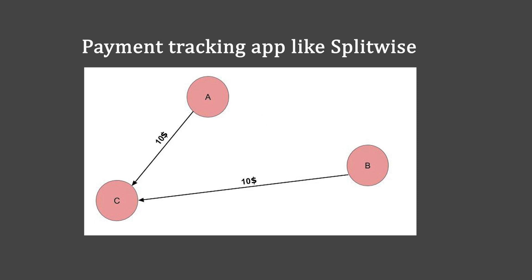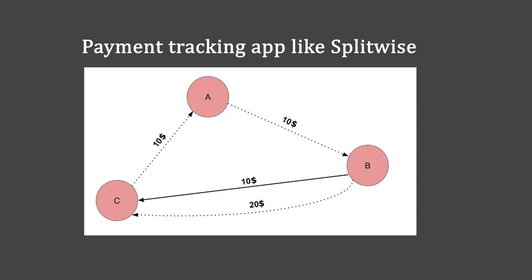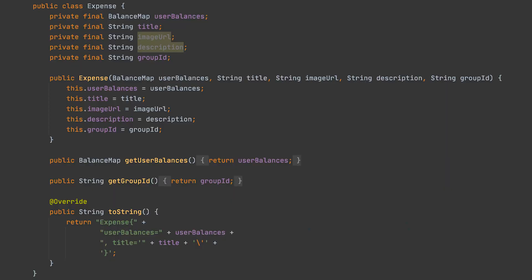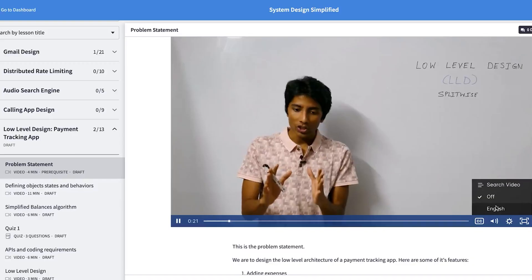The very first question is on a payment tracking app like Splitwise. You have a set of users — they owe different amounts, they have paid different amounts, and their balances are different. You might be in negative or you might be in positive. What you need to do is find, for any group, how do you simplify payments? That's an algorithmic problem. There's also a subjective component: how do you code these objects and expenses out? We'll be tackling the problem from both angles and then writing the code for it.